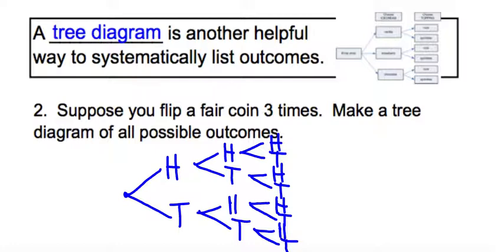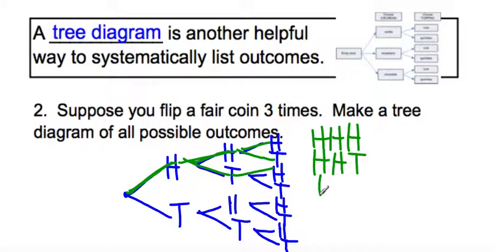Looking at this tree diagram, if you follow the different paths down, you can get all of the possible outcomes. For example, if you start down this path, heads, heads, heads, that's one of the paths you can travel: H, H, H. Or you could have gone heads, heads, tails. Or you could have gone heads, tails, heads. Or you could have gone heads, tails, tails. When you look at this, there are eight possible outcomes for flipping a coin. And that's really helpful when we start doing probability, like what's the probability of flipping exactly one tails? You'd have a picture of all the different ways that that could happen.